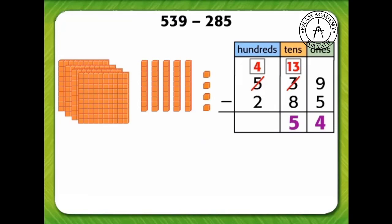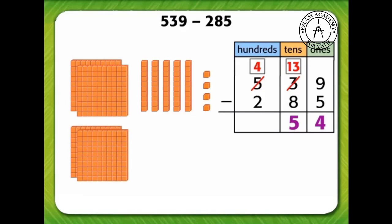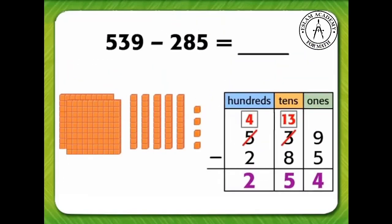Now we subtract the hundreds. When we subtract two hundreds from our four hundreds, we are left with two hundreds. Write two in the hundreds column. So, 539 minus 285 equals 254.